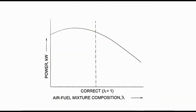The graph shown represents the power available from an engine with respect to air fuel mixture composition lambda. As indicated, with increase in the value of lambda — that is, mixture becoming lean — the power output goes on reducing. It may also be noted that a mixture with very low value of lambda, or very rich mixture, does not provide maximum power from the engine.